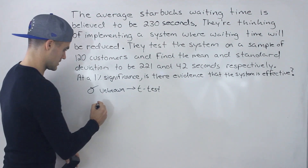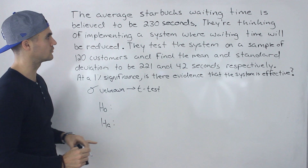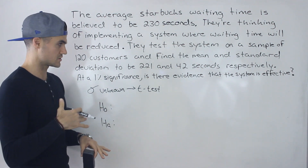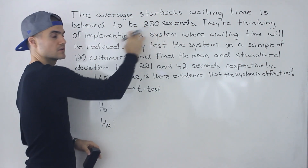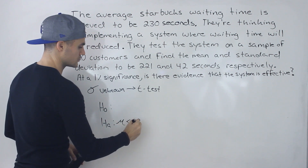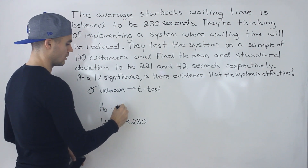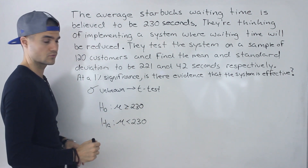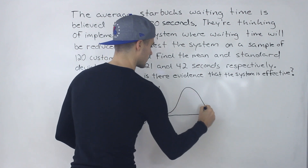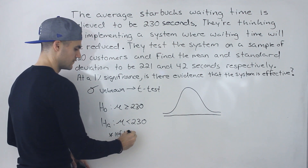Now, what are the null and alternative hypotheses going to be? I like to start with the alternative hypothesis. Starbucks is implementing a system to see whether waiting time will be reduced — the waiting time is believed for the entire Starbucks to be 230 seconds, and they want to test whether it will be less than 230 seconds. So the null hypothesis is that the waiting time is greater than or equal to 230. This is a one-tailed test, and more specifically a left-tailed test.